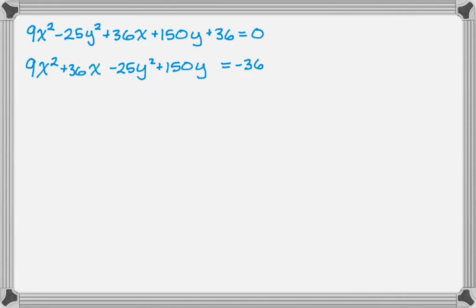So now what I'll do is I will take the greatest common factor out of each thing, so really it's the leading coefficient of x squared I'm going to factor out of the x terms, the leading coefficient of y squared I'll factor out of the y terms. So I get 9, and then the quantity x squared plus 4x, and then minus 25, the quantity y squared minus 6y. So remember you're taking negative 25 out, so negative 25 out of 150 will leave you with negative 6, and then it equals negative 36.